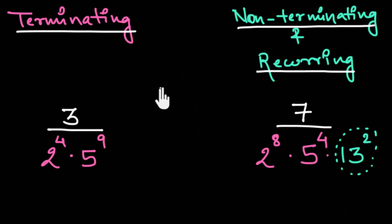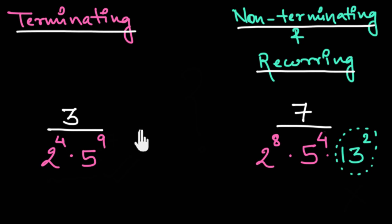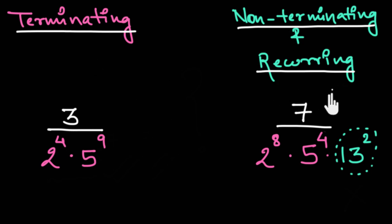In the last video, we saw how we can determine whether the decimal form of a given rational number will be terminating or non-terminating and recurring.